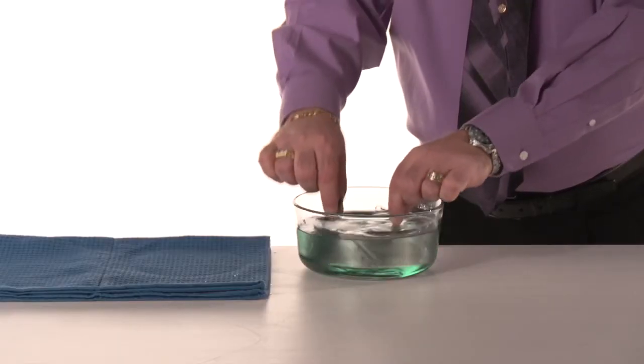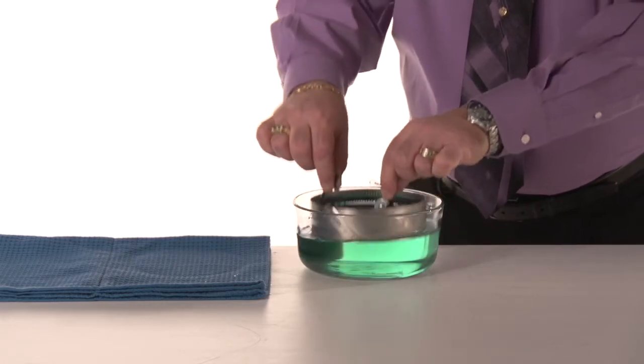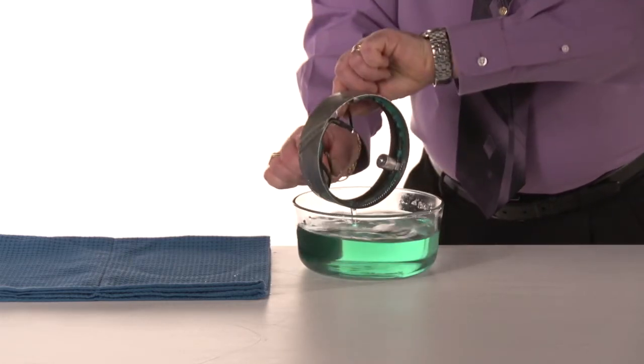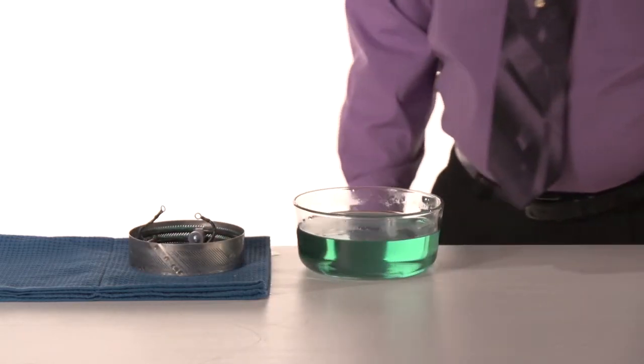So after we have submerged this in the water and we've gotten as much of the sugar buildup off of there as we possibly can, we'll take that heat element and let it dry on the counter overnight.